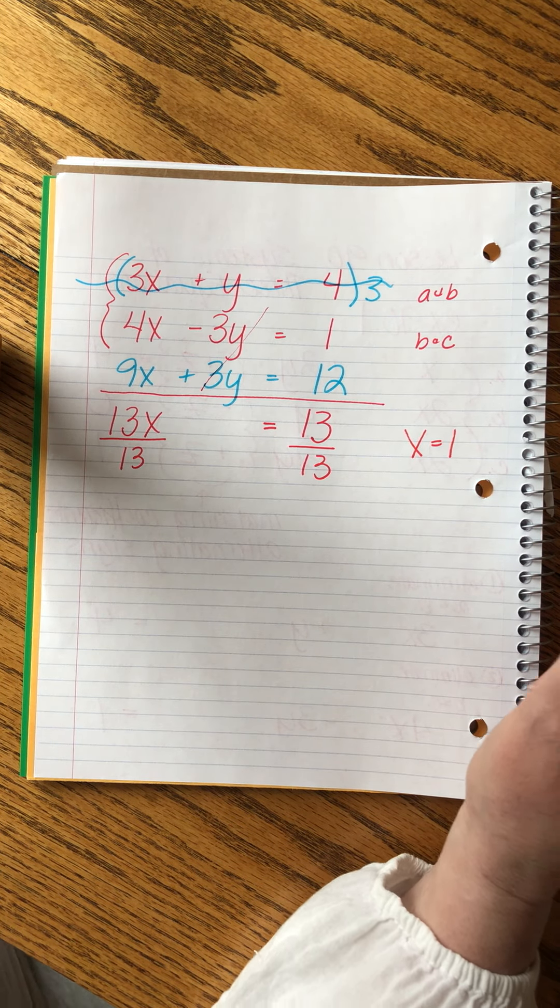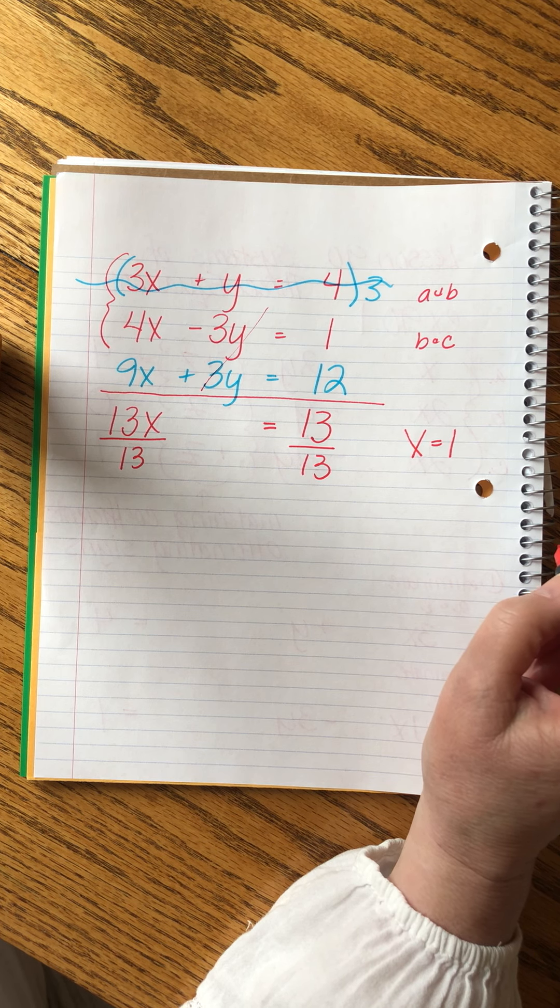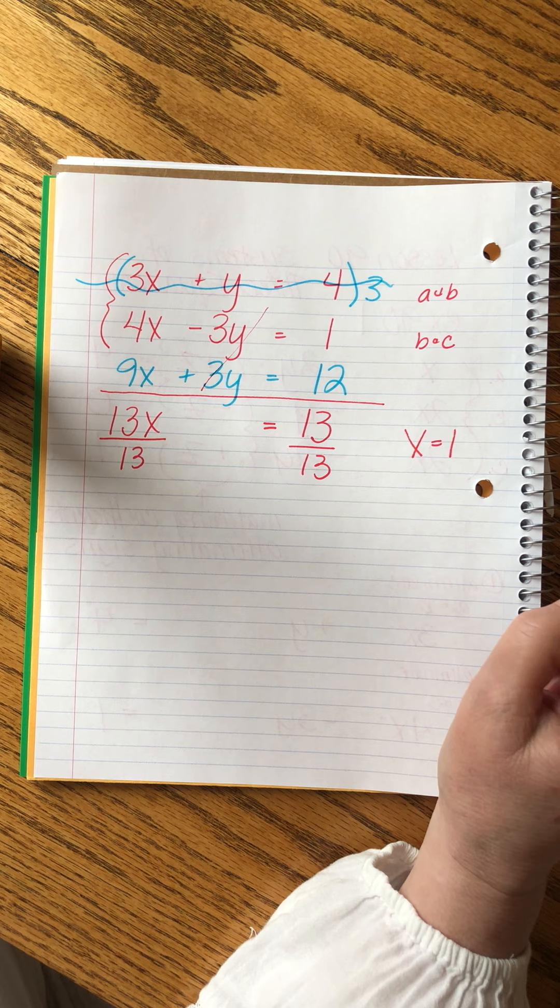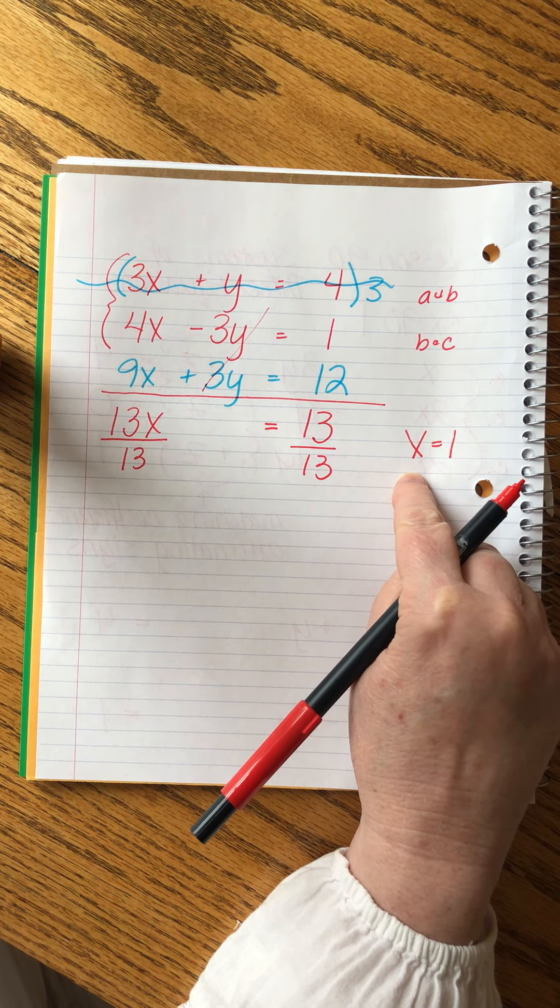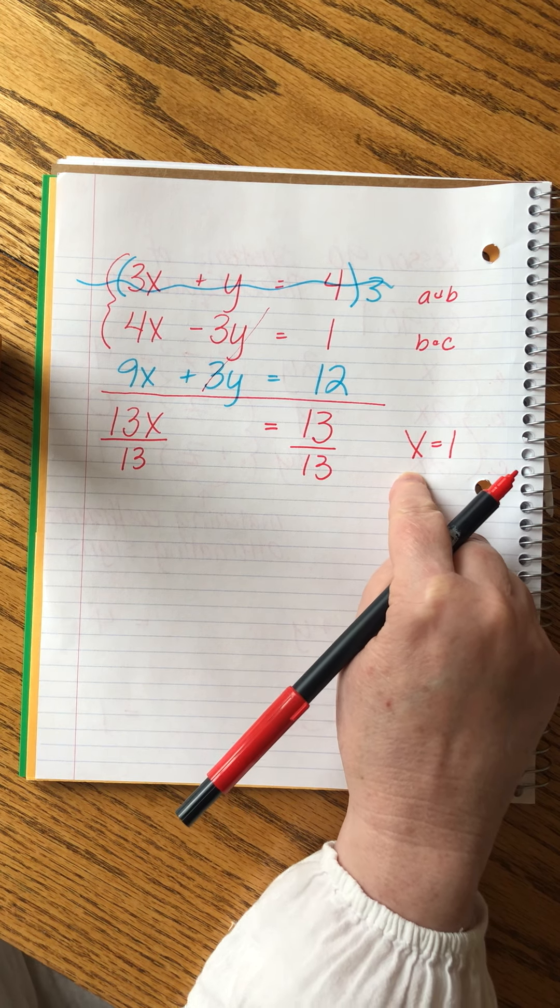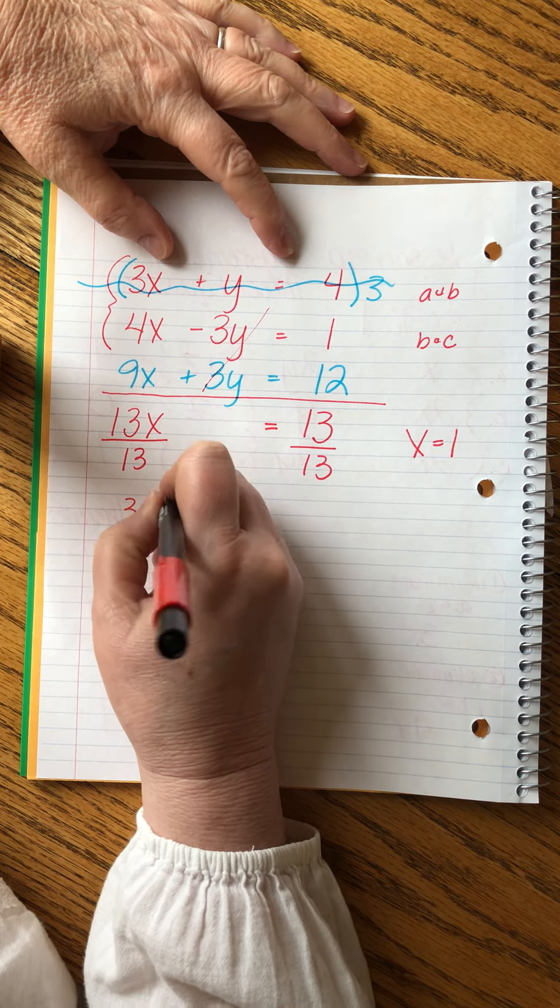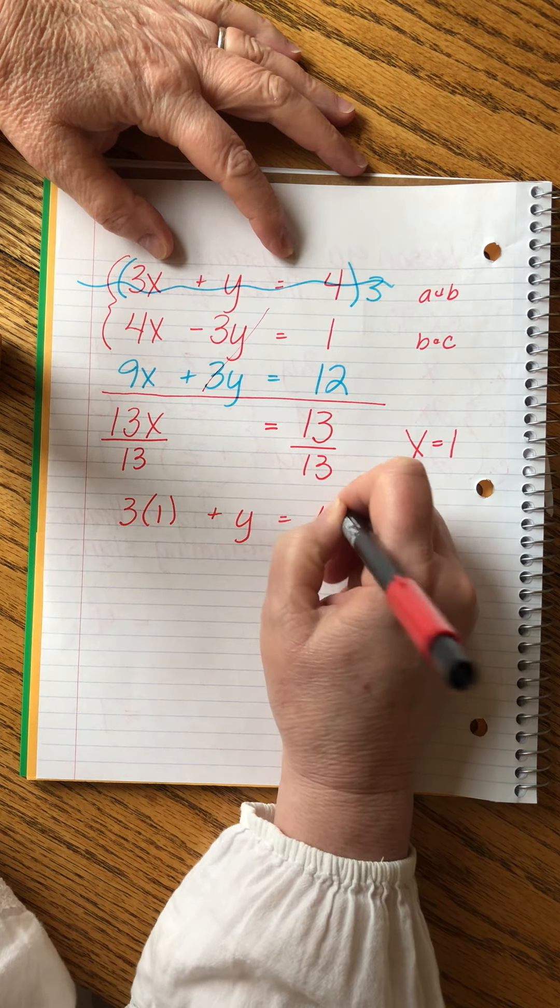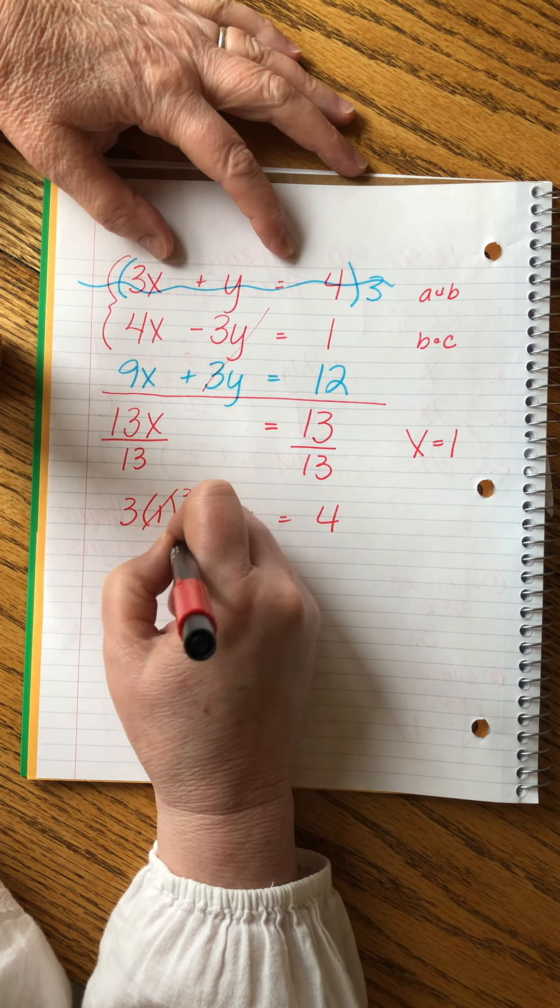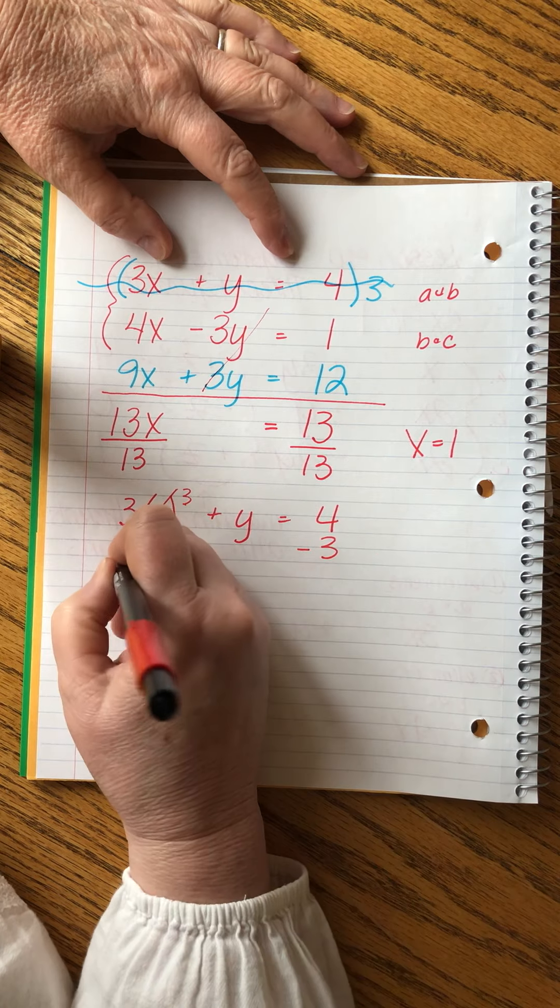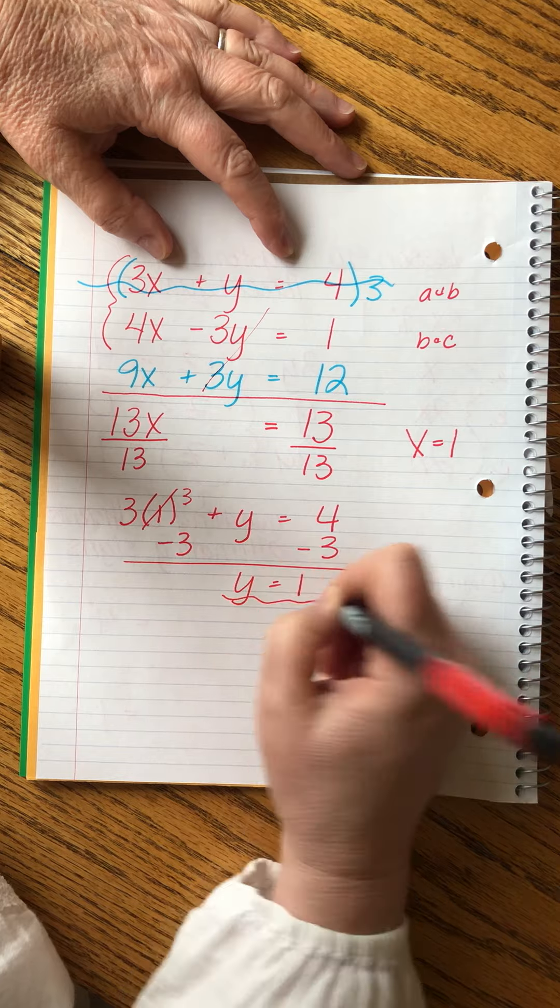Now, just like our other system of equation problems, I have to go back in and solve for the other letters. I can use any of the equations I want. But I know that it's going to be really helpful if I use the simpler equations whenever I can. This one looks pretty simple. 3 times 1 plus y equals 4. Well, that's 3. So if I subtract 3, I get y equals 1. Here's my second answer.